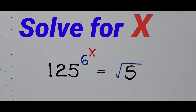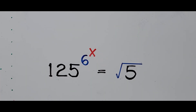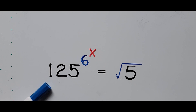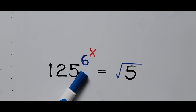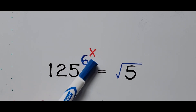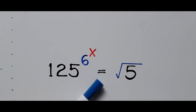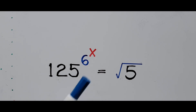Hello everyone, welcome to Cassiano Easy Math. Today's video is about solving another exponential equation: 125 to the 6th power, to the power of x, equals the square root of 5, and we're going to find the value of x.